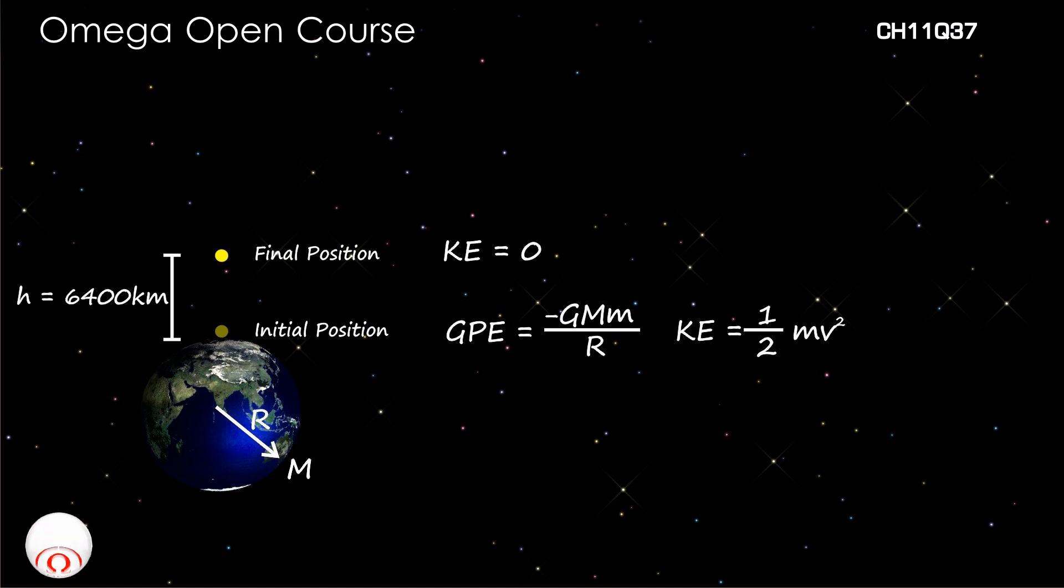Also, since the particle is at a distance R+h from the center of the earth, the gravitational potential energy of the particle earth system is -GMm/(R+h).